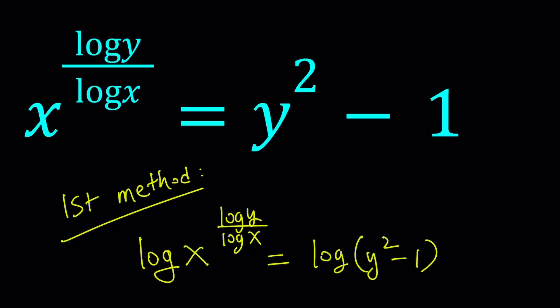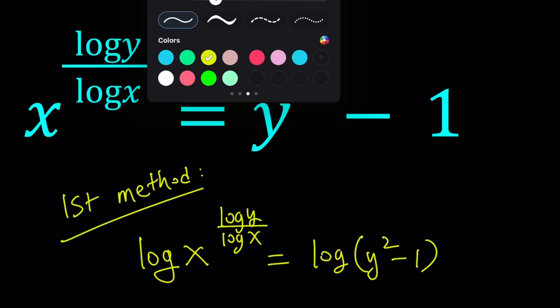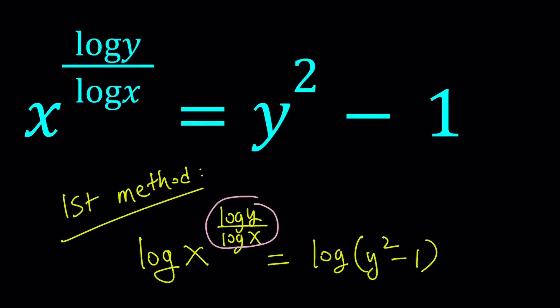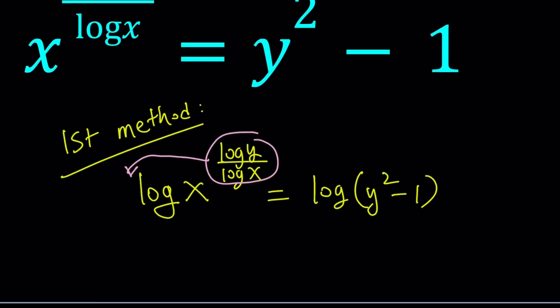Why? Because you can go ahead and bring the exponent down. So you can go ahead and move this to the front. And it will simplify our expression. So that's going to be log y over log x, multiplied by log x, equals log y squared minus 1.